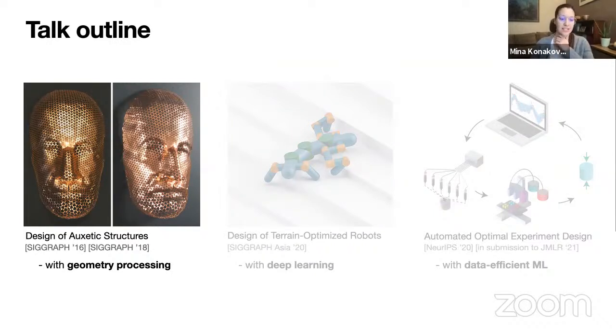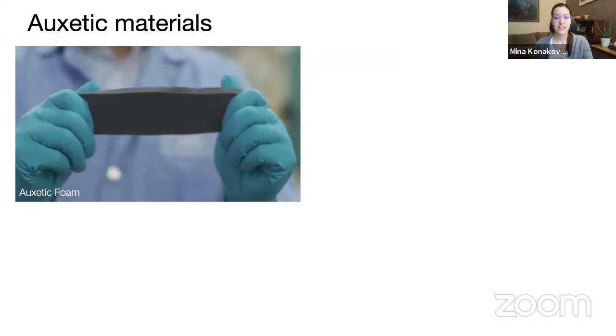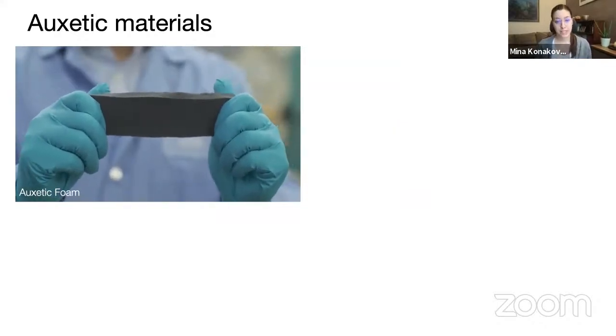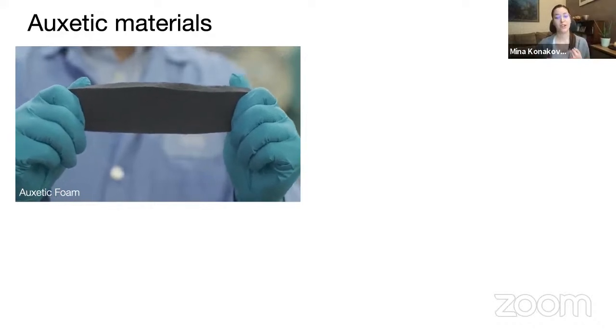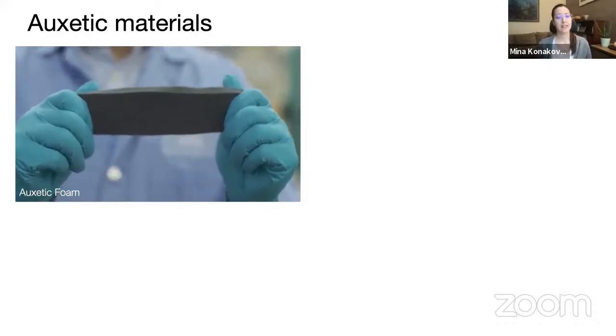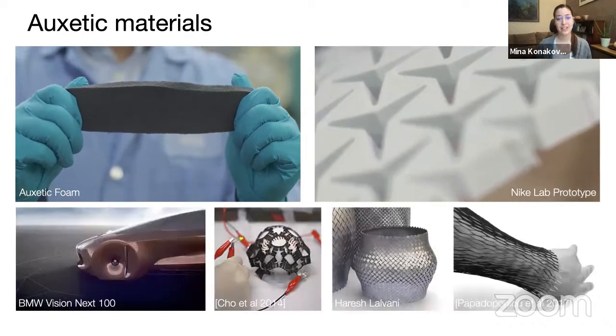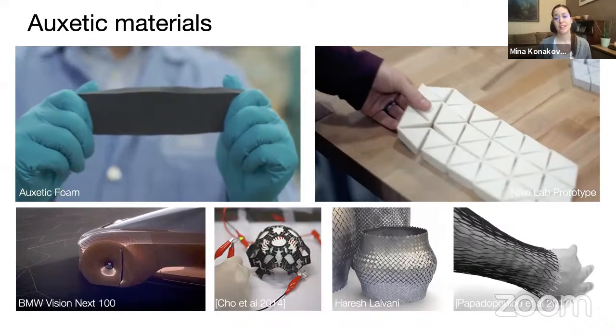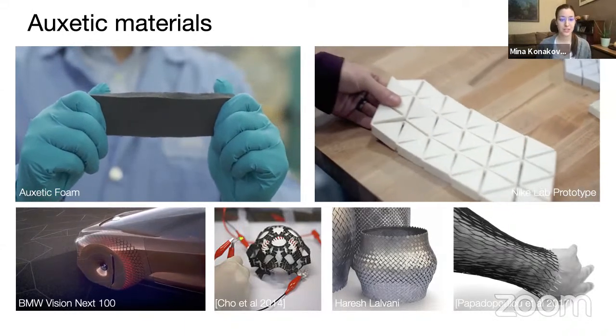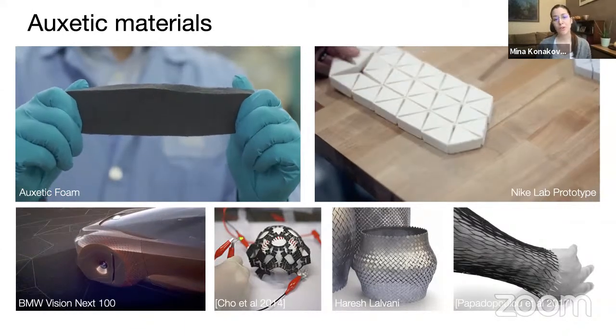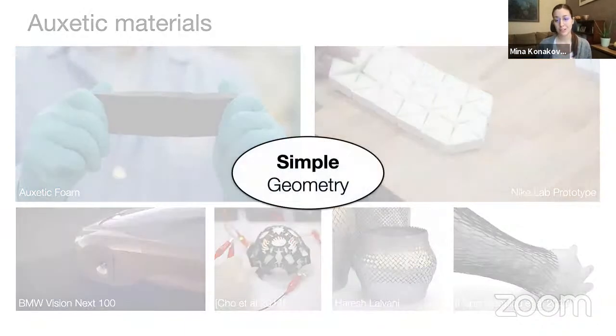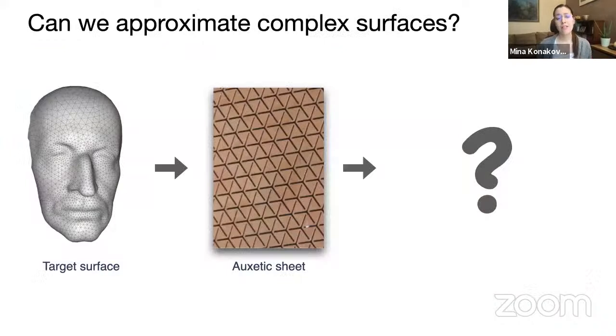So first project is about designing auxetic structures. Now, first of all, what are auxetic materials? They are these engineered materials that have the unintuitive behavior. When the material is stretched in one direction, it also expands in all other directions. And they appear in many different forms, like this three-dimensional foam or a triangular linkage. They are also used in automotive industry for electronically actuated devices, art, fashion, and so on. But the problem with all these things we've seen before is that they're all limited to very simple geometries. They're either planar, spherical, or cylindrical, but not much more than that. So our question in this project was, can we approximate more complex surfaces with auxetic sheet?